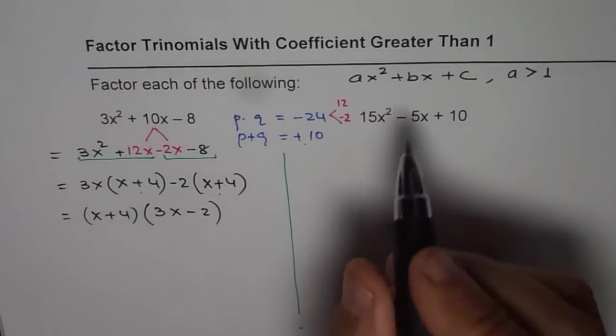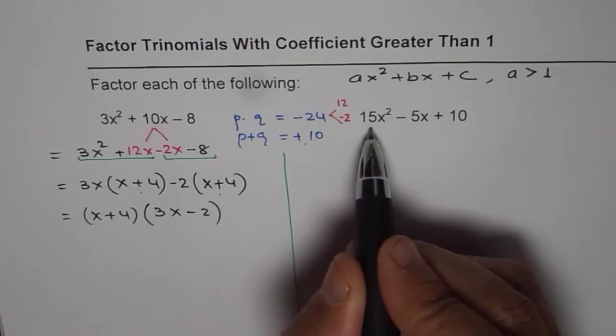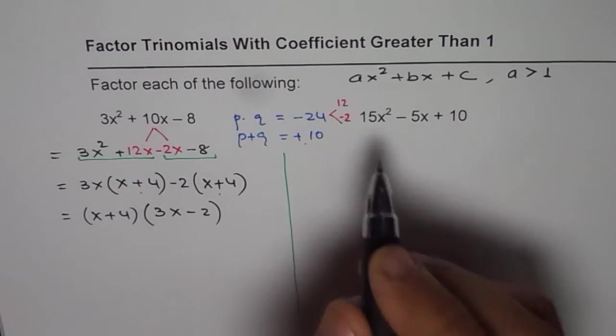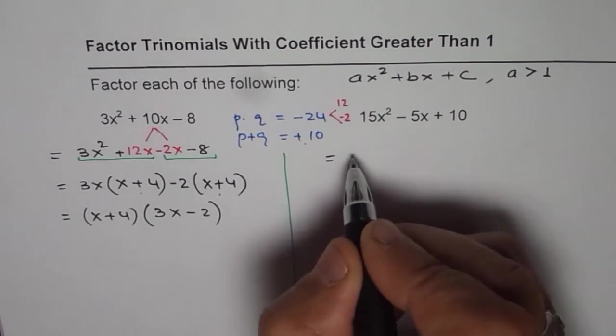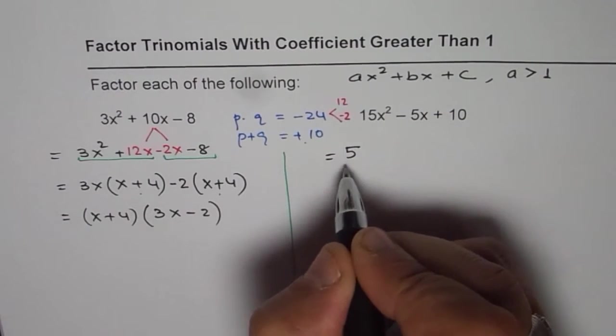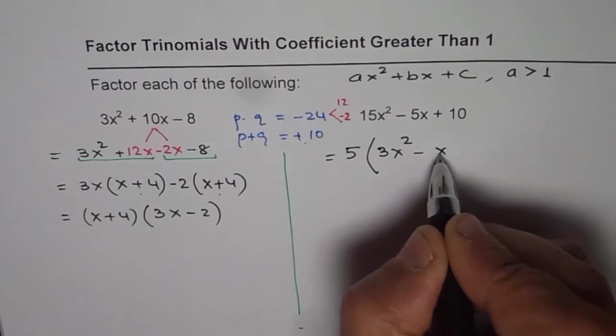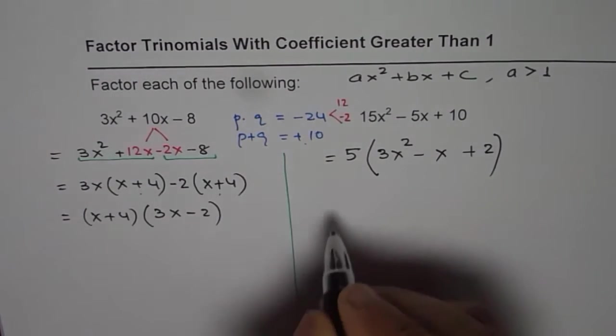Now purposely I have taken the next one which is slightly different. We will do it in two steps kind of. 15x² - 5x + 10. There is a common factor in the group itself which is 5. So first step is if there is one, find that common factor and factor it out. 5 is common. So we are left with 3x² - x, 10 divided by 5 is +2. That is what we get.